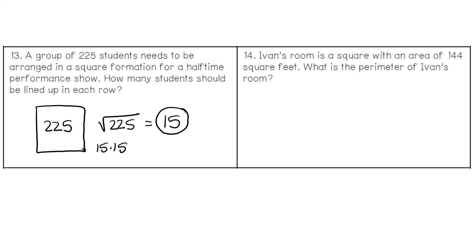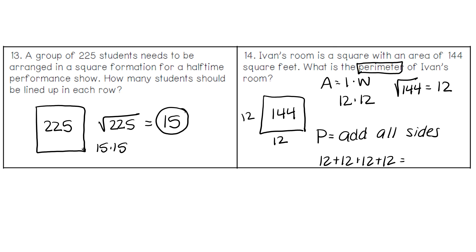For number 14, Ivan's room is a square with an area of 144 square feet. What is the perimeter? Area is represented by length times width. To get 144, we would multiply 12 times 12. That's where we took the square root of 144 to get the side lengths of 12. However, the question asks for perimeter, which is when we add all the sides. We add up 12 four times: 12 plus 12 plus 12 plus 12 gives us 48 feet.